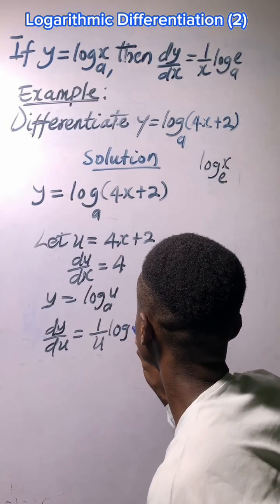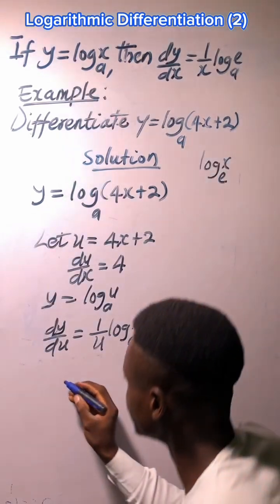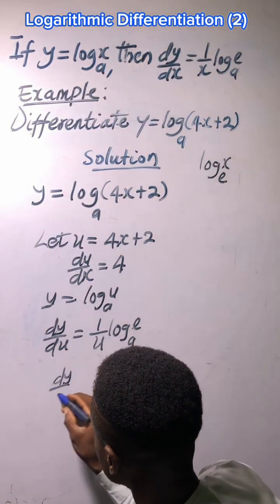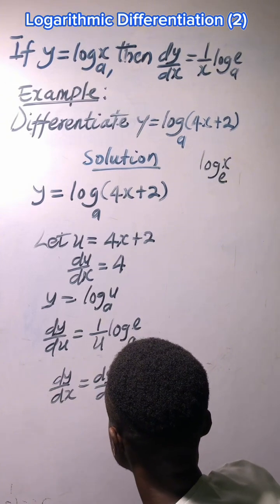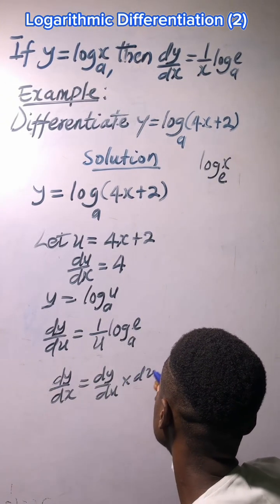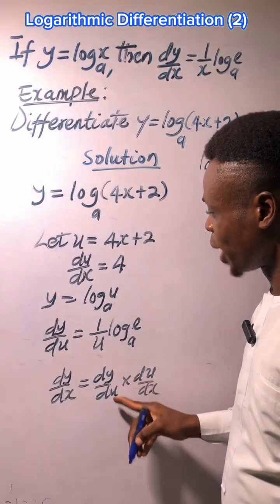The next thing is to use the formula chain rule, which is dy/dx equal to dy/du times du/dx. So we are going to substitute dy/du.